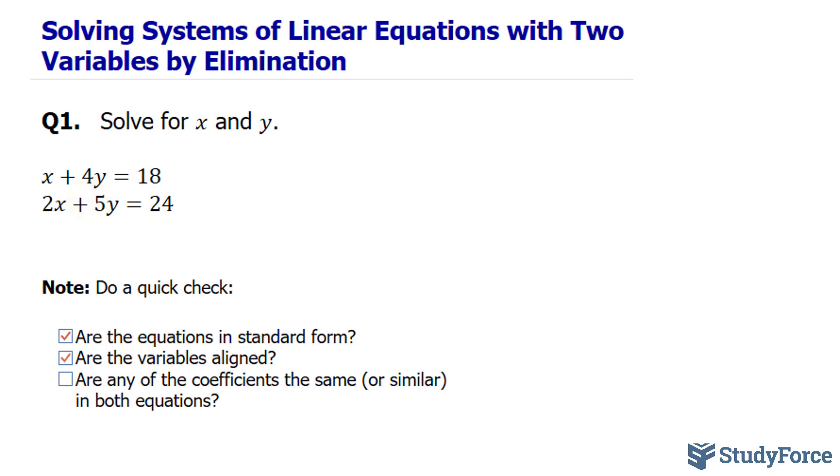And finally, are any of the coefficients the same or similar in both equations? By similar, I mean that the coefficients are the same number except they're opposite signs. So let's go ahead and analyze. The coefficient of this x is 1, and the coefficient of that x is 2. They're not the same, nor are they similar.